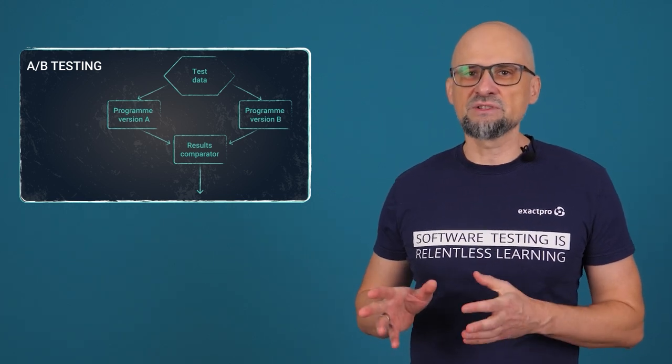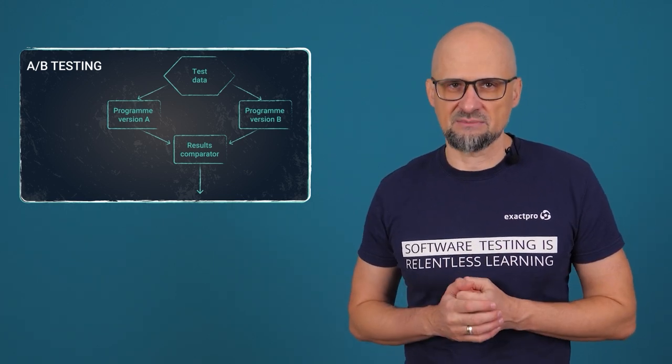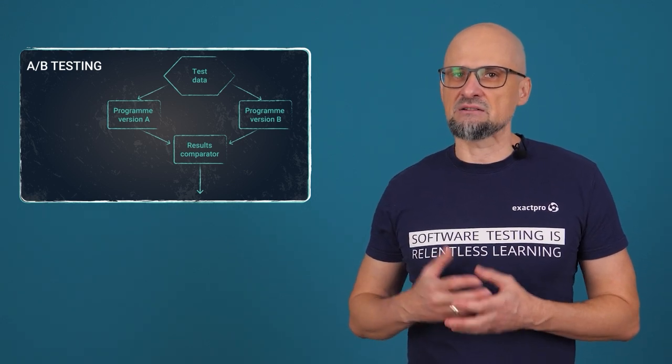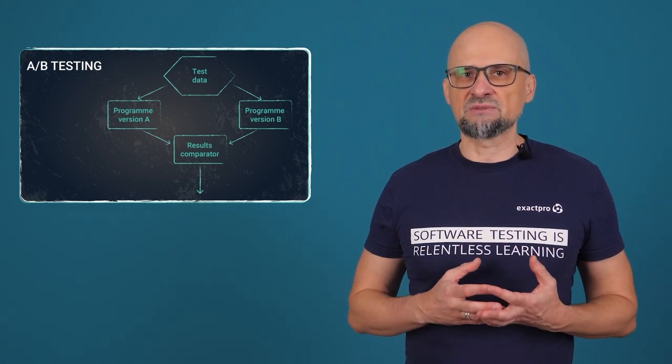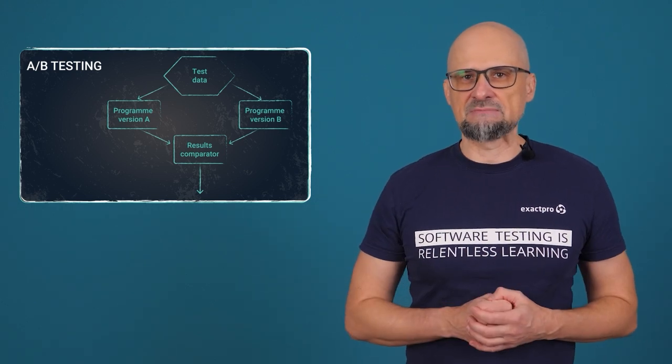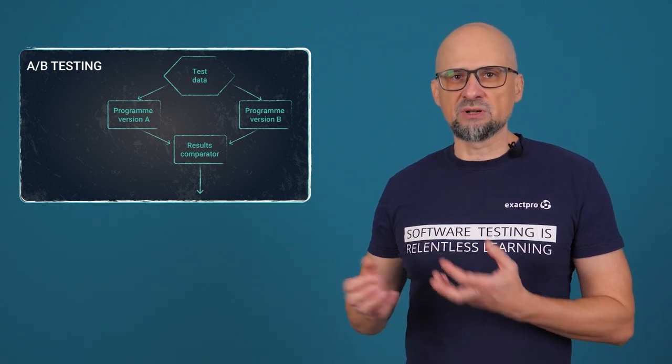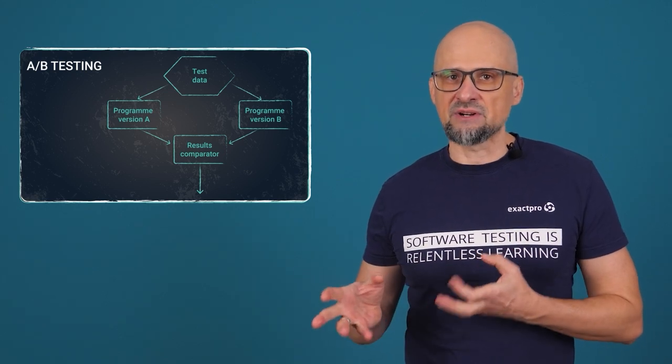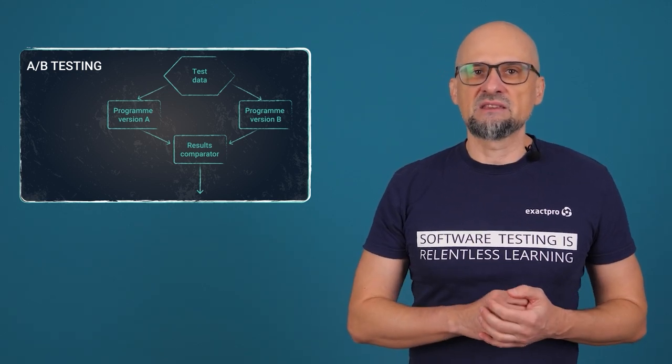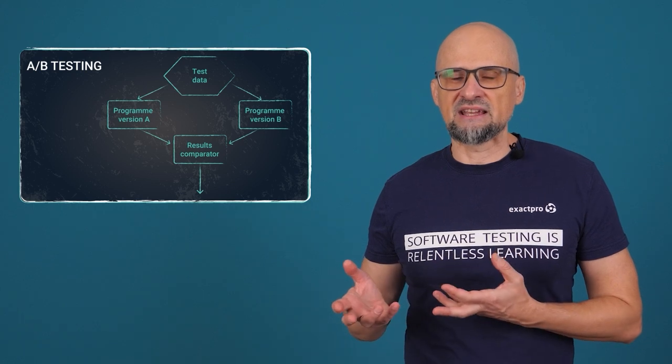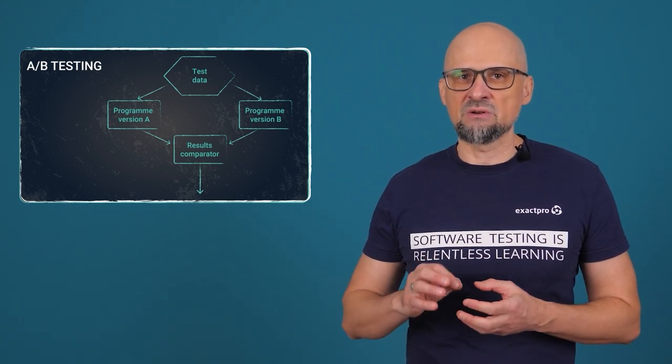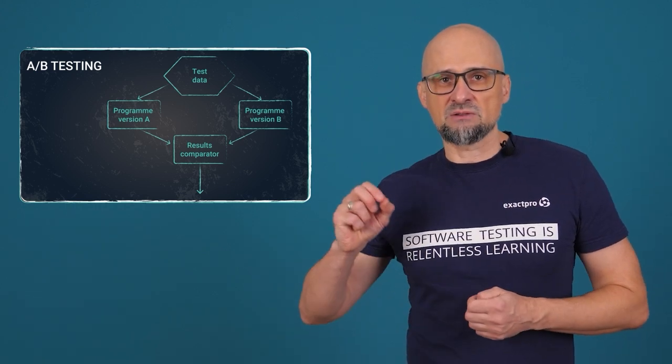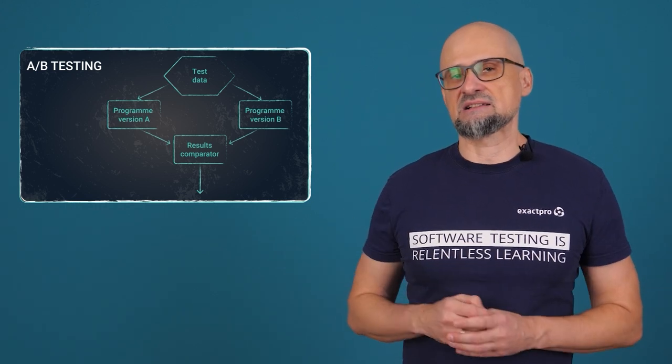A/B testing can also be used to test self-learning systems. When the system makes a change, automated tests are run and we compare the results with those before the change was made. If the system is improved, then the change is accepted. Otherwise, the system reverts to its previous state. The biggest difference between A/B testing and back-to-back testing is that we use A/B testing to compare two versions of the same system and we use back-to-back testing to detect defects.